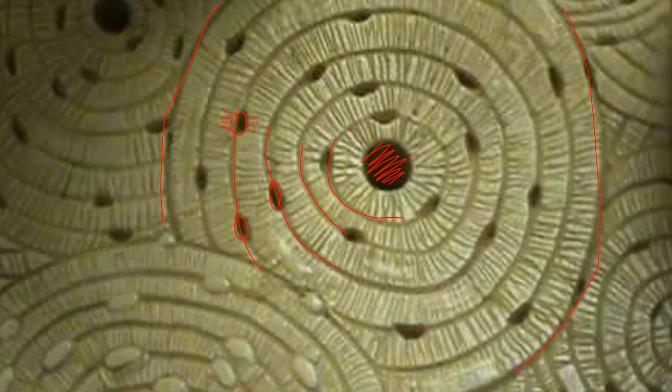The brownish-tannish color here is the bone matrix, sometimes referred to as osteoid, sometimes just called the bony matrix.